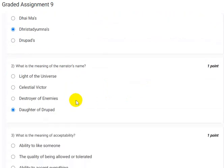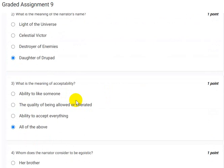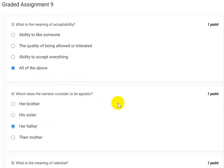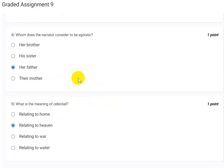The next question is what is the meaning of the narrator's name? So the meaning of the narrator's name is daughter of Drupad. What is the meaning of acceptability? The meaning of acceptability is the ability to like someone, the quality of being allowed or tolerated, ability to accept everything, so the answer is all of the above.